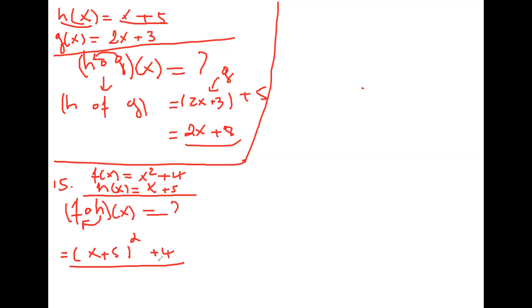That's pretty much it. It might not be as easy as this one to simplify. You can leave it like this — if you want you can distribute it, expand it first and then add the four, but it's fine to leave it as (x+5)² + 4. We can't just combine 5 and 4 because of the squared power — you'd have to expand it first and then combine like terms. For now, just leave it like this unless it simplifies easily.